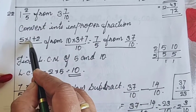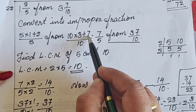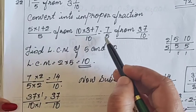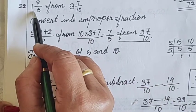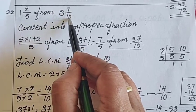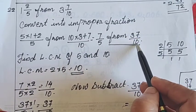That means 5 times 1 is 5 plus 2, 7 by 5. And 10 times 3 is 30 plus 7, 37 by 10. So now the fractions are instead of 1 integer 2 upon 5 and 3 integer 7 upon 10, we have 7 by 5 and 37 by 10.